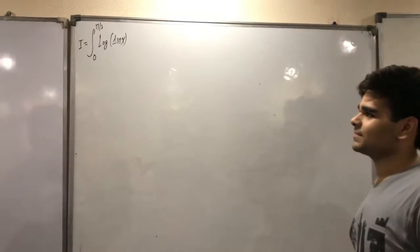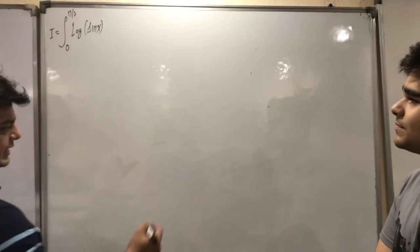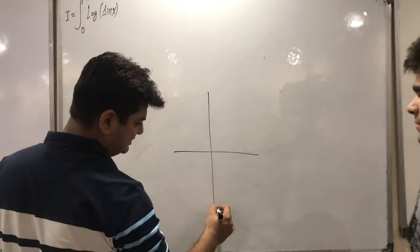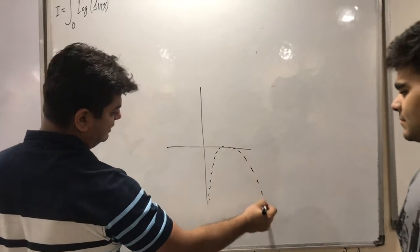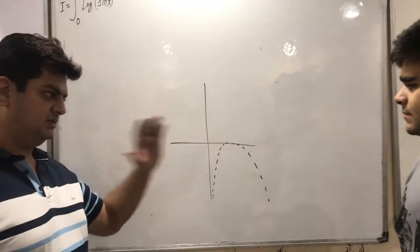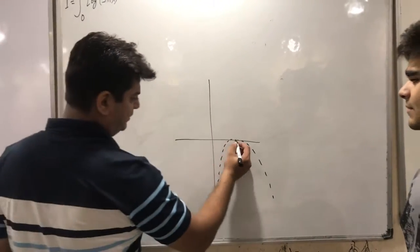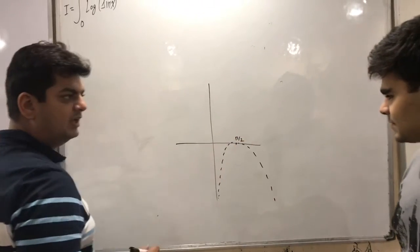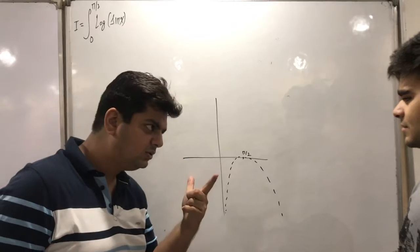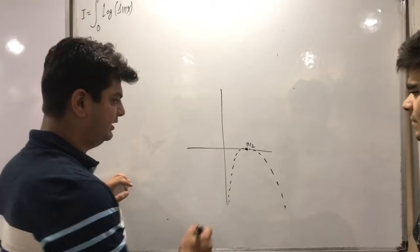Integration of log sin x from 0 to pi by 2. Just for the records, I am telling you that something like this would be its graph, log sin x. Something like this would be like that. Here it would be pi by 2 for that matter. Because sin pi by 2 happens to be 1, log 1 is 0. So this will be the point. It will be intersecting.